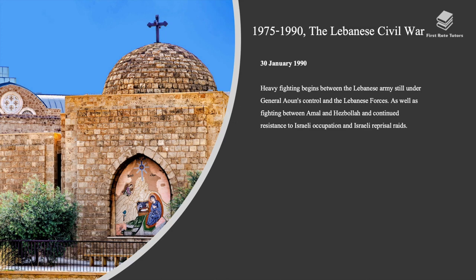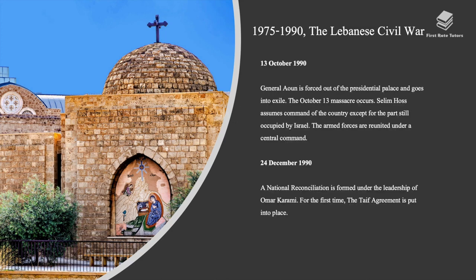In January 1990, heavy fighting began between the Lebanese army, still under General Aoun's control, and the Lebanese Forces, as well as fighting between Amal and Hezbollah, continued resistance to Israeli occupation, and Israeli reprisal raids. In October 1990, General Aoun was forced out of the presidential palace and went into exile. The October 13 massacre occurred. Selim Hoss assumed command of the country except for the part still occupied by Israel. The armed forces were reunited under a central command. On December 24, 1990, a national reconciliation government was formed under the leadership of Omar Karami. For the first time, the Taif Agreement was put into place.